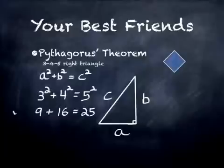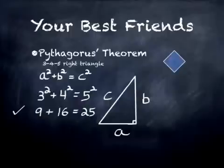3 squared is 9, 4 squared is 16, and 5 squared is 25. You'll see this works whether it's 30, 40, 50, or 9, 12, and 15, or whatever else we use that comes out to be the same ratio as 3, 4, 5. And it works for any type of right triangle.